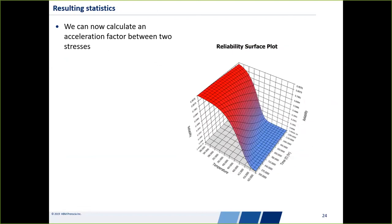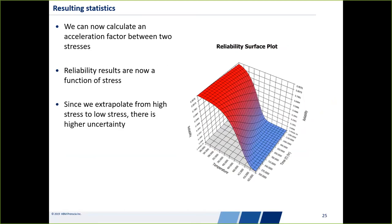After doing this, we can calculate an acceleration factor between two stresses. We now have reliability results in a 3D surface — reliability versus time versus temperature, essentially the 3D version of the typical reliability versus time plot. At any given temperature, we can come up with our reliability versus time plot and all results of interest. Something to keep in mind is that there's still higher uncertainty than you might be used to, so it's even more important to report confidence intervals on your reliability results. The software can help you do this using a variety of different methods.